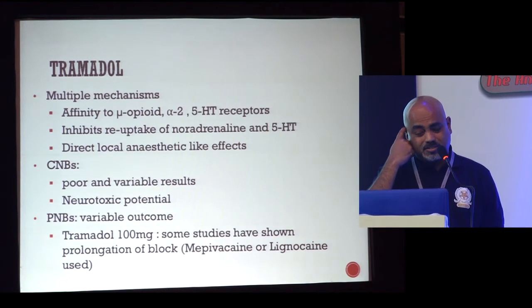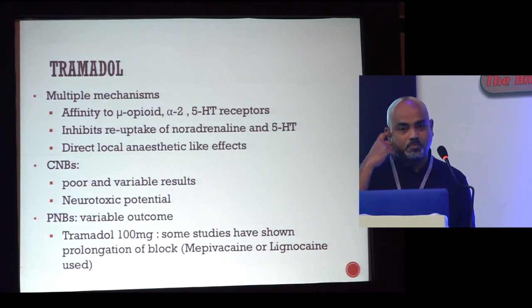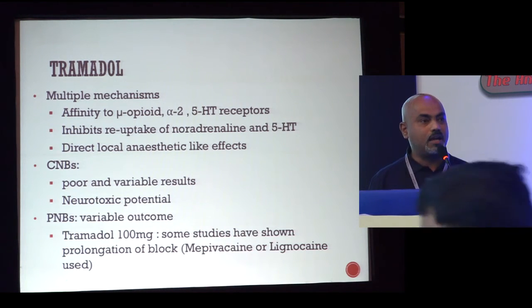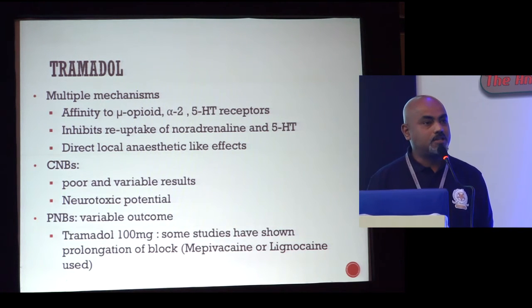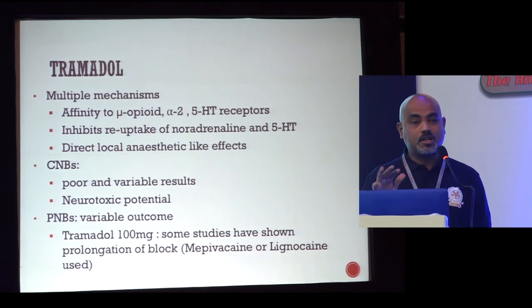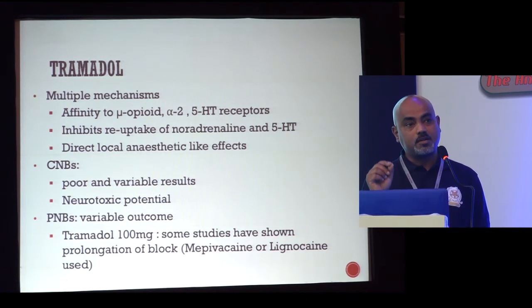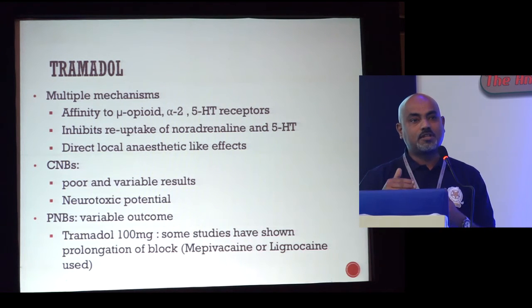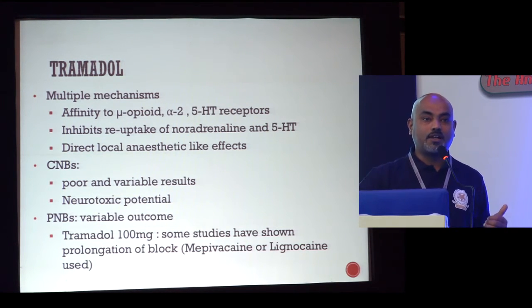Tramadol is a unique drug. Every year they find some new site or mechanism of action for tramadol. It has opioid activity, alpha-2 activity, serotonergic pathways, and inhibits reuptake of noradrenaline and serotonin. It has also been shown to have a direct local anaesthetic-like effect. In central neuraxial blocks: poor and variable results and there is some question of neurotoxicity. In peripheral nerve blocks, results have been 50-50. At around 100 mg doses it is shown to prolong blocks of short- and intermediate-acting agents, but not long-acting agents. There is no point giving tramadol as an adjuvant to a long-acting agent, since its effects are much shorter than the duration of those agents.